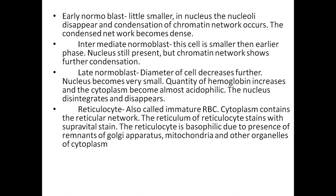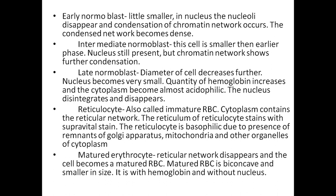Reticulocyte — also called immature RBC: cytoplasm contains reticular network which stains with supravital stain. The reticulocyte is basophilic due to presence of remnants of Golgi apparatus, mitochondria, and other organelles of cytoplasm. Mature erythrocyte: the reticular network disappears and the cell becomes a matured RBC — biconcave, smaller in size, containing hemoglobin but without a nucleus.